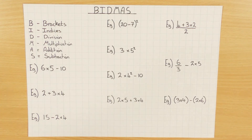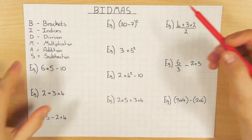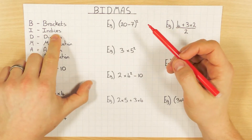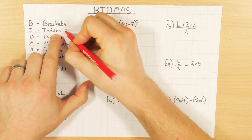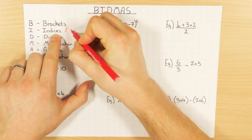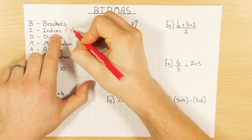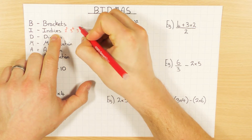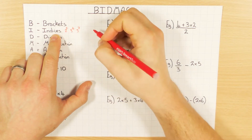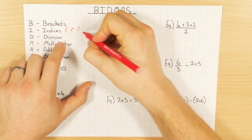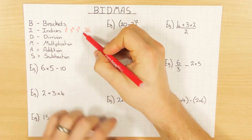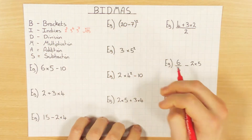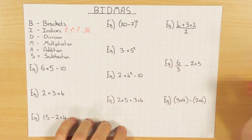Let's have a go at some examples to illustrate the point. One thing I will just mention: indices, if you're unsure what that means, that's like your powers — so 2 squared, or 3 to the power of 4, or 5 to the power of 7. But also square roots and cube roots come under indices.